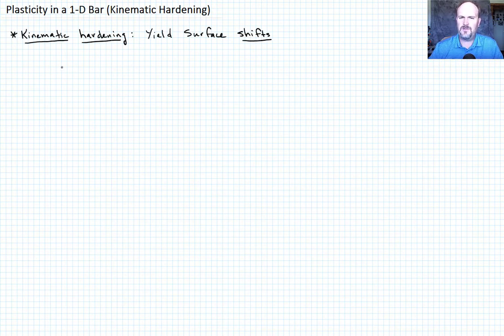So if we draw our stress axis, this would be just a straight line in one dimension. Let's say this is our zero, and then we have some initial yield point sigma naught, and in compression we have negative sigma naught.